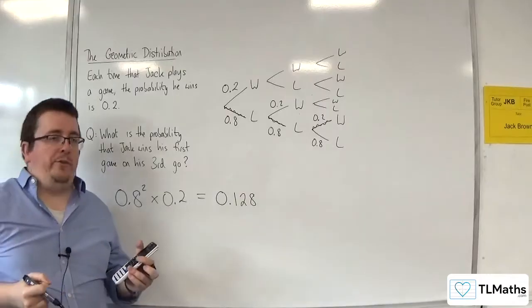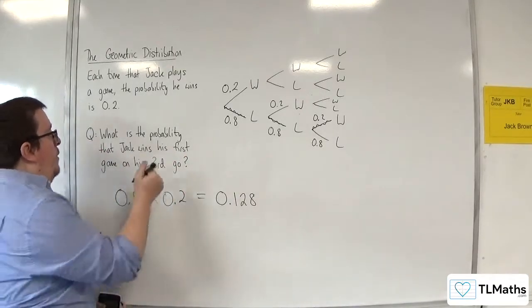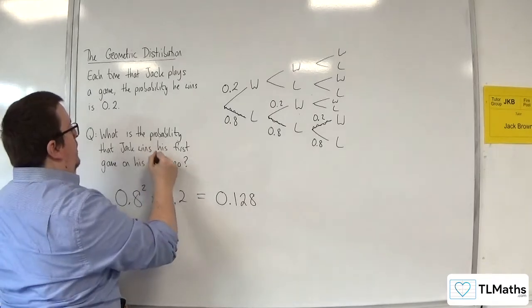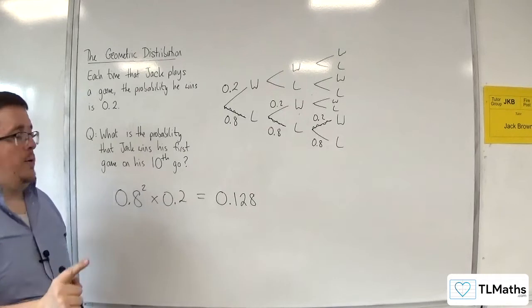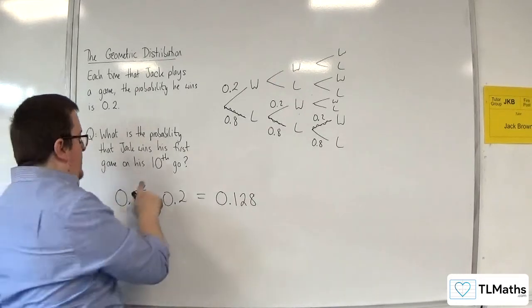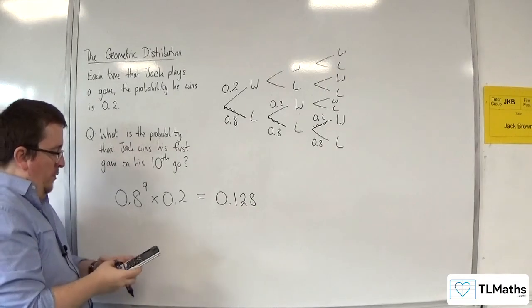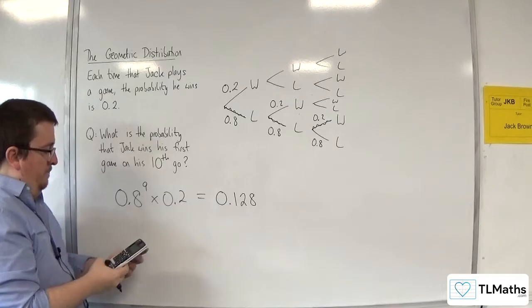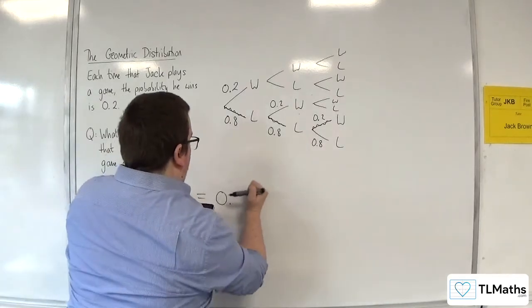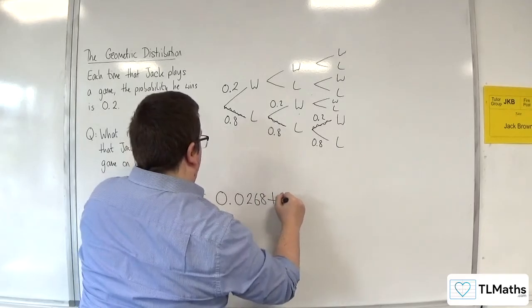Let's say we changed it up slightly. What's the probability that Jack wins his first game on his tenth go? That means that Jack would have to lose 9 times and then win. So that would be 0.8 to the power of 9 times 0.2, and we get 0.0268 to four decimal places.